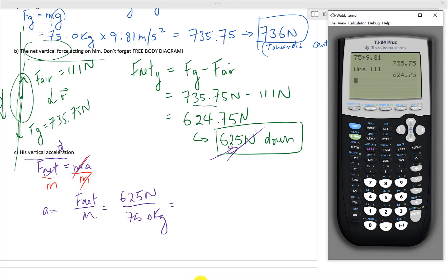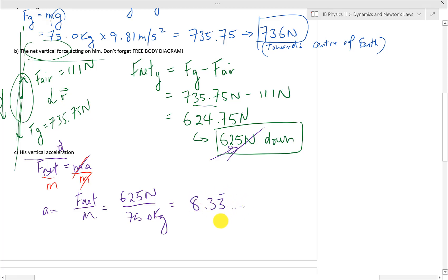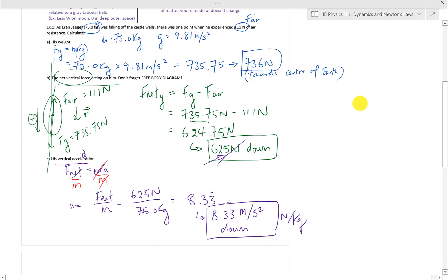So solving for acceleration, I get F net over M. So that's 625 newtons divided by 75 kilos. I get 8.3333 repeated, which is going to round to 8.33 meters per second squared in the downwards direction. Or I could use newton per kilogram as my units. That works too. So that's question one.